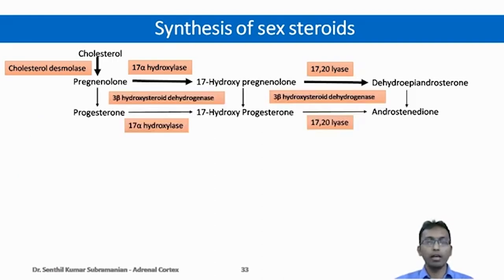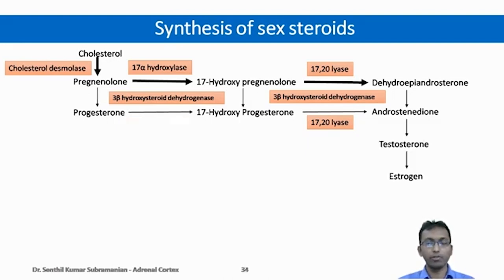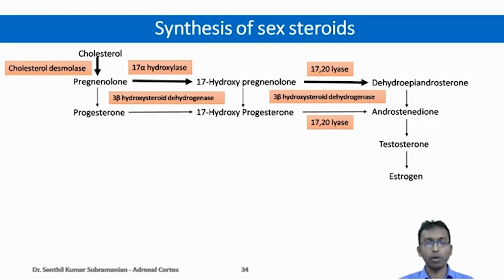The second less common pathway is from pregnenolone to progesterone, which is converted to 17-hydroxyprogesterone, which is acted upon by 17,20-lyase to form androstenedione. So androstenedione is another sex steroid secreted from the adrenal glands. Androstenedione is further converted into testosterone and estrogen. So sex hormones are secreted from adrenal glands in addition to the gonads.